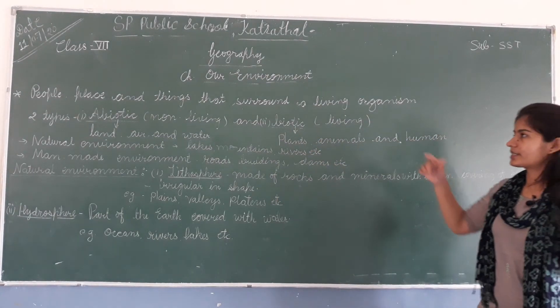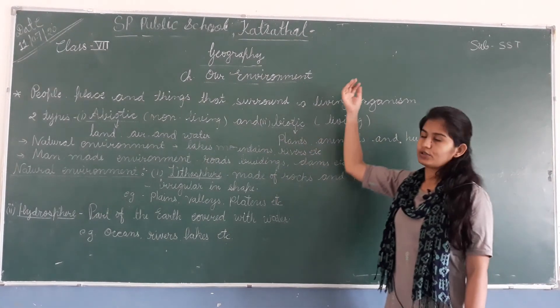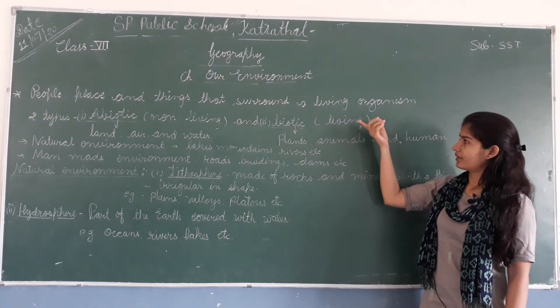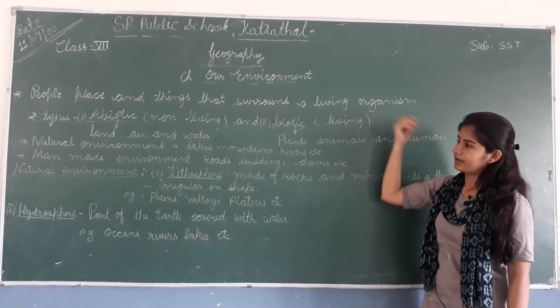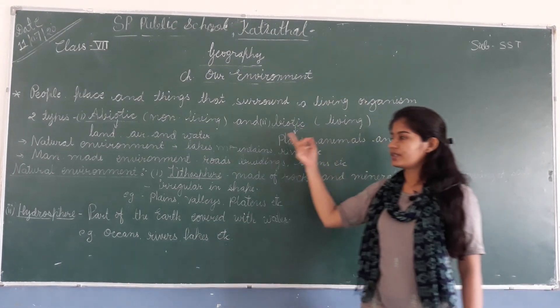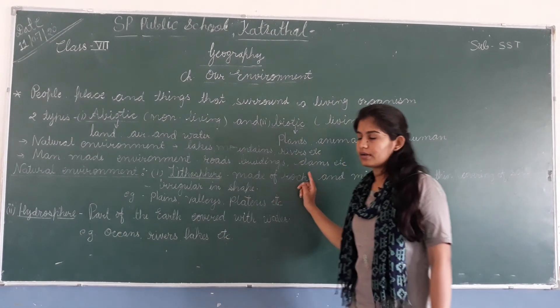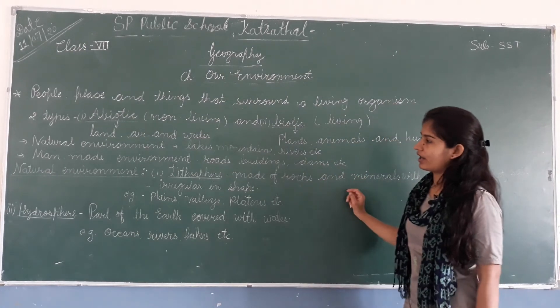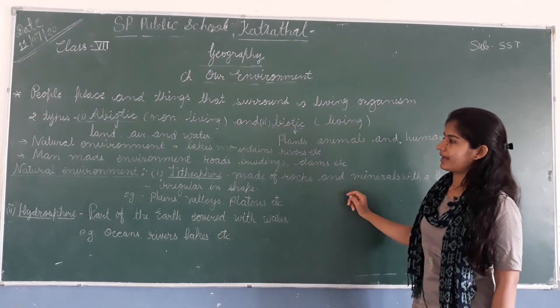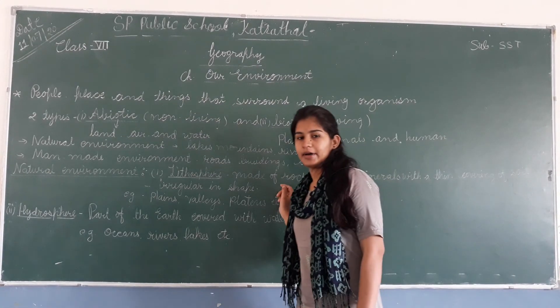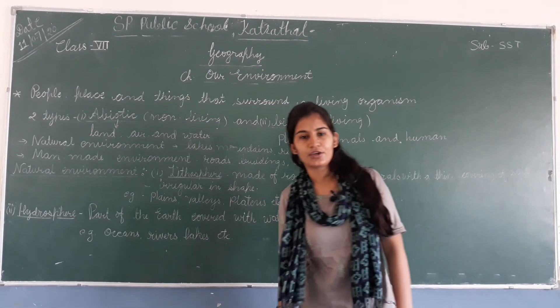So, to summarize: environment is everything around us. There are two types — natural and man-made. The natural environment is further divided into biotic and abiotic. Thank you.